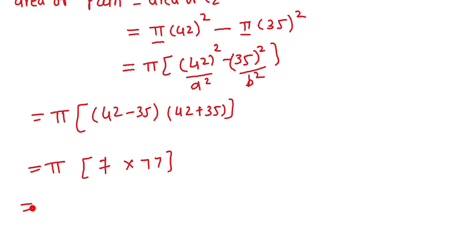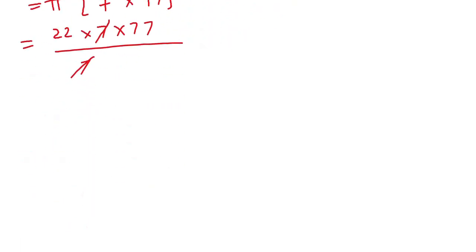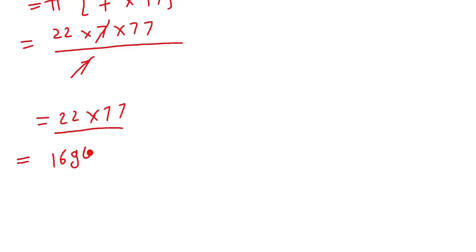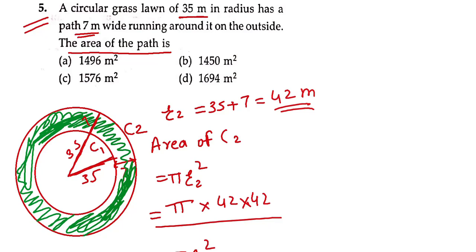Multiplication करनी है: 22 × 77 = 1694। So area of path = 1694 metre square — option number D।